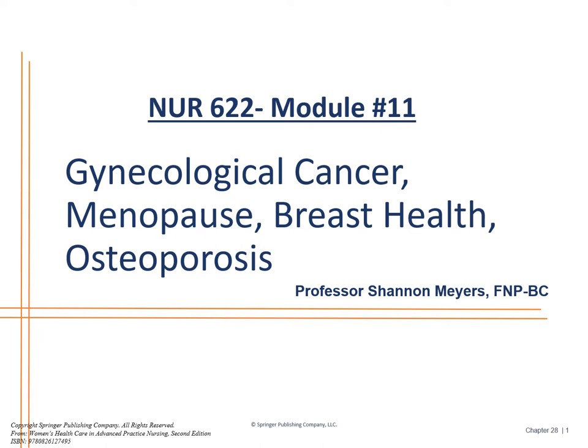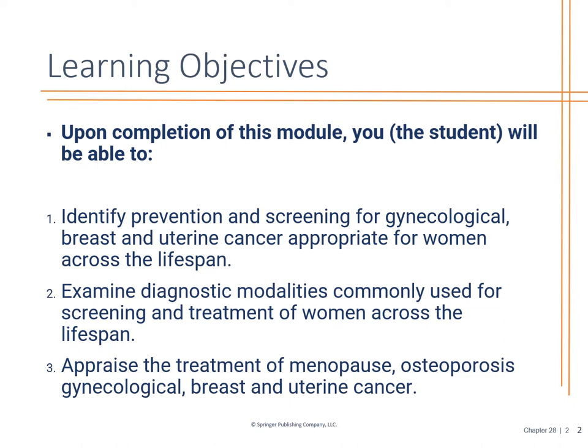This is Nursing 622, Module 11: Gynecological Cancer, Menopause, Breast Health, and Osteoporosis. The objectives are to identify prevention and screening for gynecological, breast, and uterine cancers across the lifespan, as well as the diagnostic modalities and treatment plans.